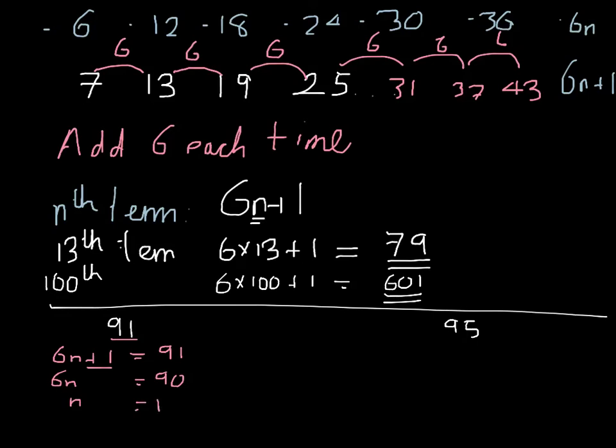So actually, 91 is in the sequence. It's the 15th term. So having found an n that's a whole number, we know it's that term.